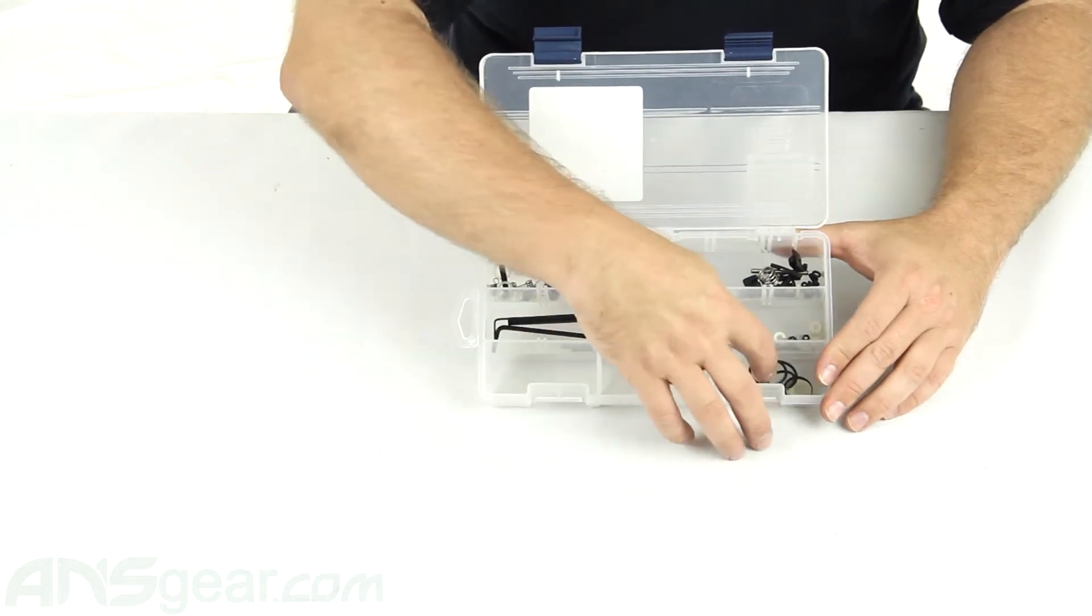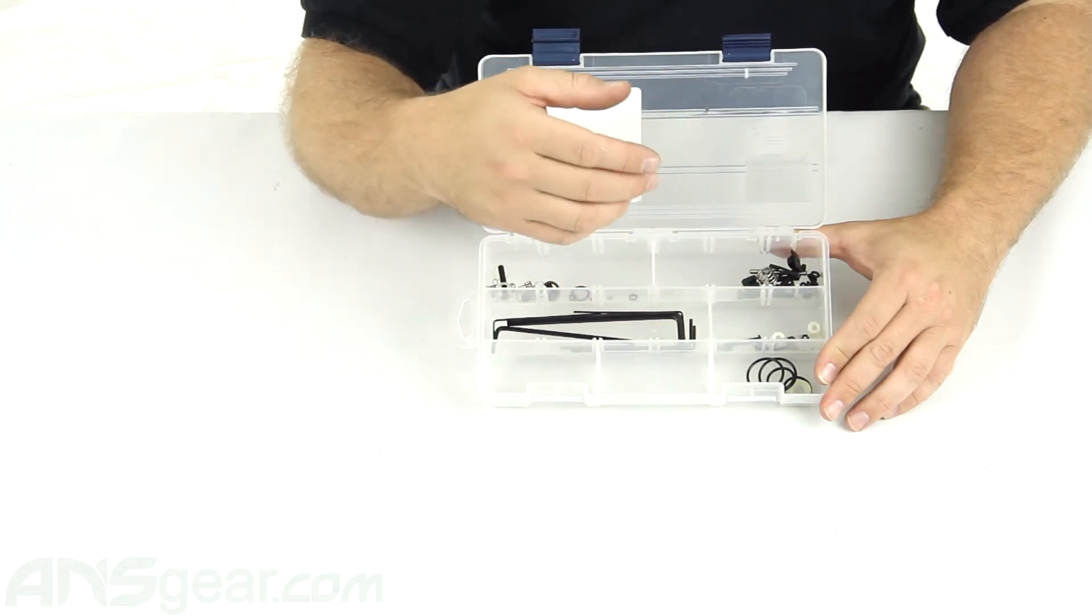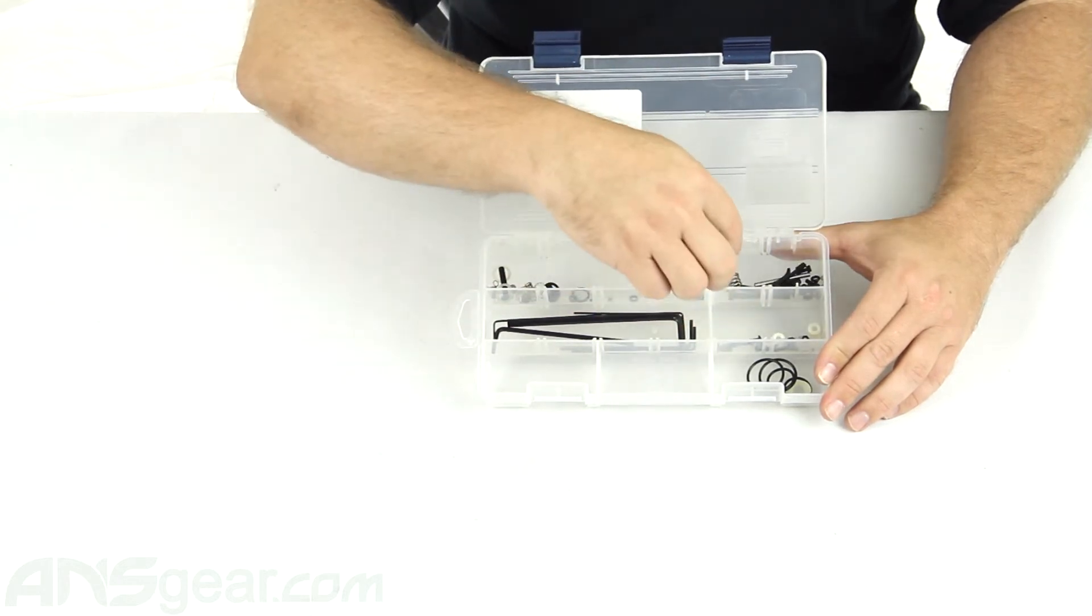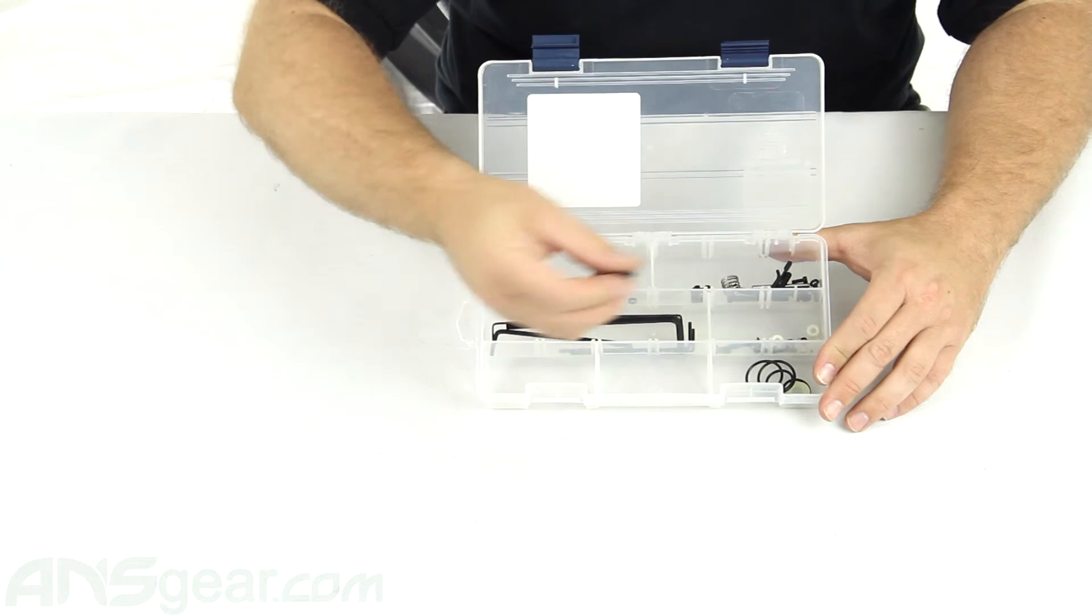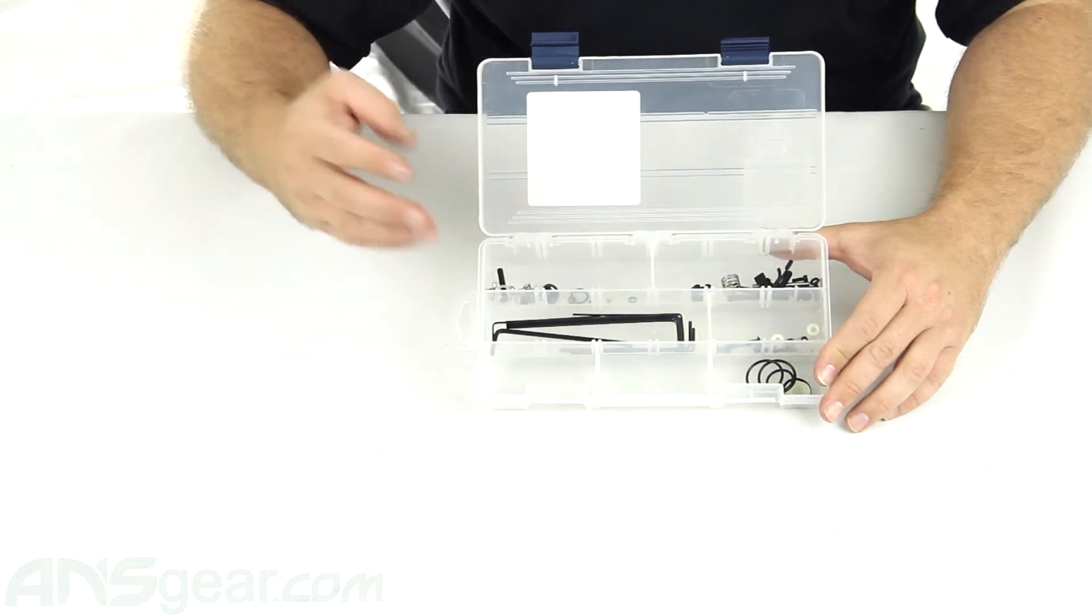You're going to get O-rings, the set of Allen keys, most of your set screws and springs, as well as even extra sights, things that can pop off your gun if you lose them.